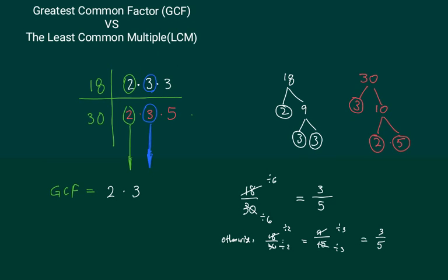Alright, let's do the easy one first. Here I have two numbers, 18 and 30. I use the number tree over here to break it down into prime numbers: 2·3·3 for 18 and 2·3·5 for 30.